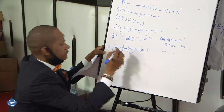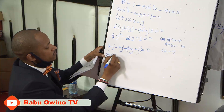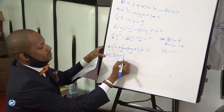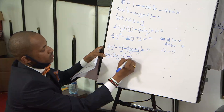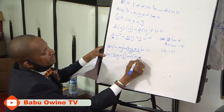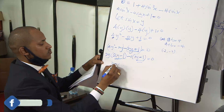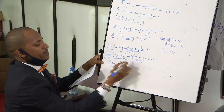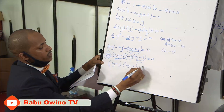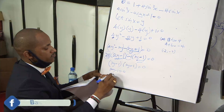Collecting like terms from the split: 2y(2y − 1) − 1(2y − 1) = 0, giving (2y − 1)(2y − 1) = 0. So 2y − 1 = 0, meaning 2y = 1, therefore y = 1/2.